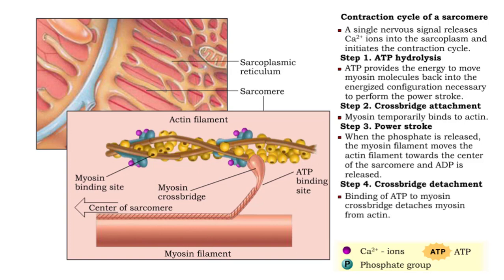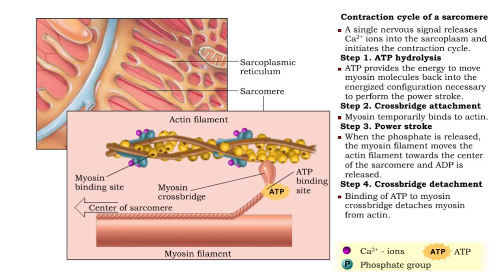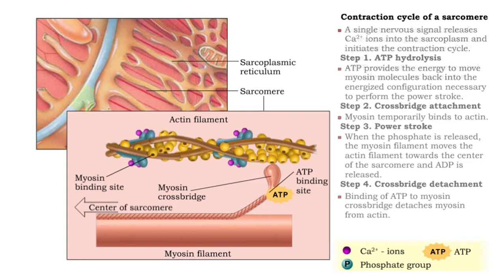Fourth, the myosin head and actin are detached when another ATP molecule binds to the crossbridge. This ends one contraction cycle.